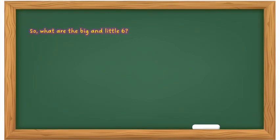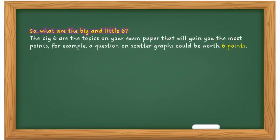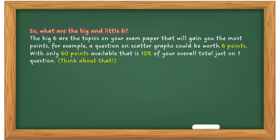So what are the big and little six? Well, the big six are the topics on your exam paper that will gain you the most points. For example, a question on scatter graphs could be worth six points. With only 60 points available, that is 10% of your overall total just on one question. So think about that.